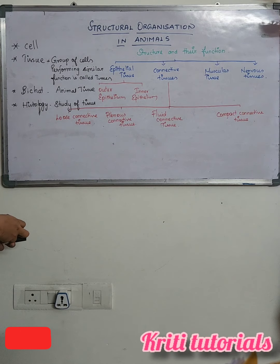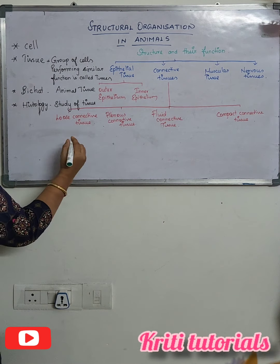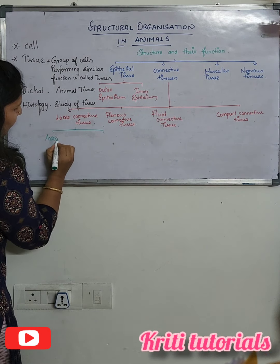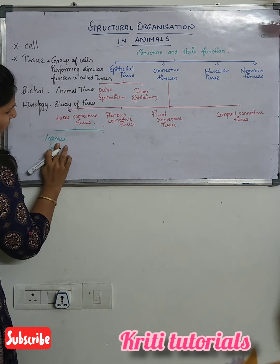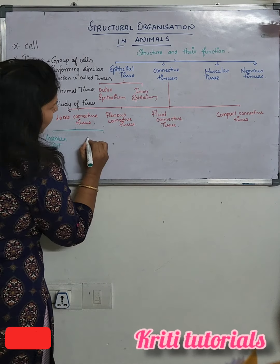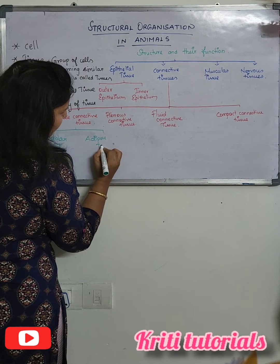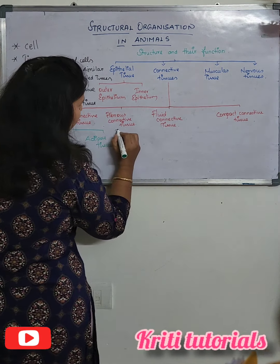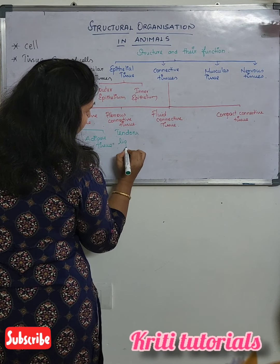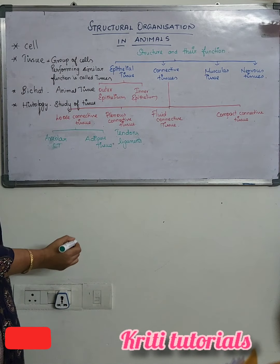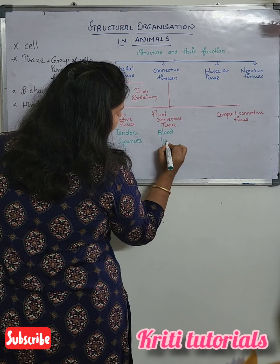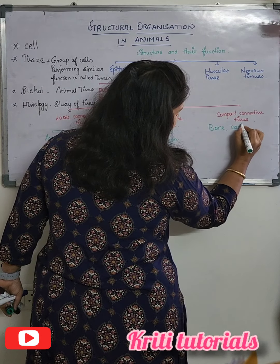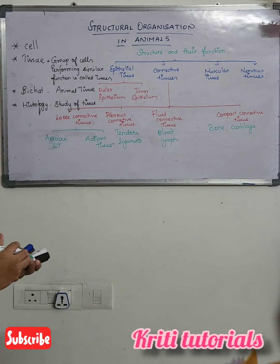Coming to specific examples: loose connective tissues are further classified into areolar connective tissue and adipose tissue. Fibrous connective tissues are present in tendons and ligaments. Fluid connective tissues are seen in blood and lymph. Compact connective tissues are bone and cartilage. These are the types of connective tissues.